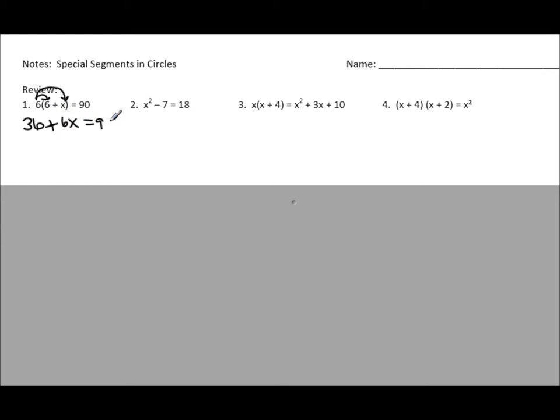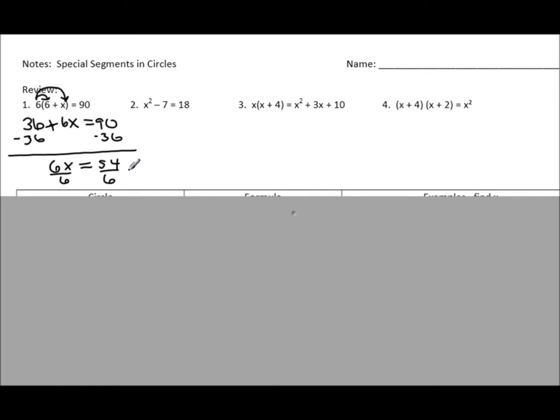And that all equals 90. Going through and solving the rest of it for x, we're going to subtract 36 from both sides, and we'll get 6x equals 54. Divide by 6 on both sides, which will leave us with x is 9.